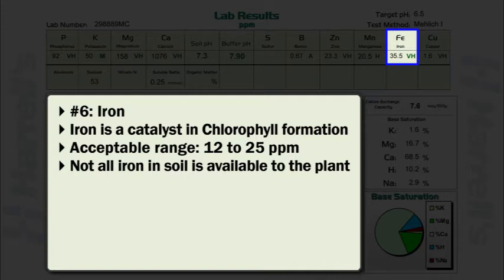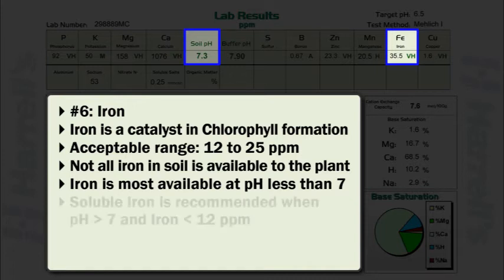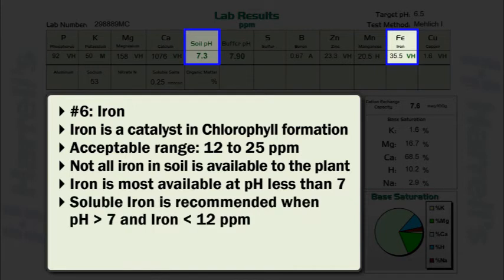As previously noted, soil pH plays an important role in the availability of iron. Iron is most available at soil pH levels less than 7. If soil pH is greater than 7 and iron is less than 12 parts per million, applications of soluble iron are highly recommended.